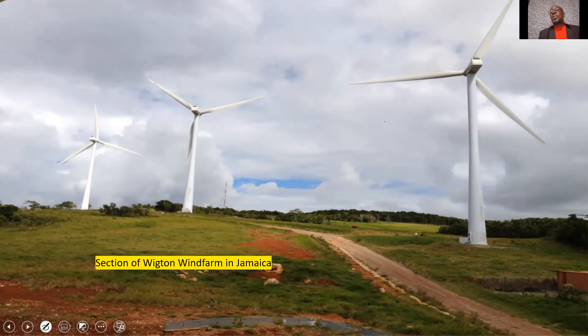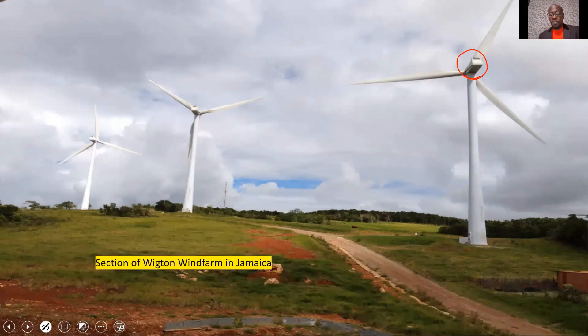And this is a section of the Wheaton Wind Farm in Jamaica. So, all that we just discussed in terms of the gear, the generators, etc., would be in that section, which is our nacelle. And all of that is then connected in the substation of the wind farm.